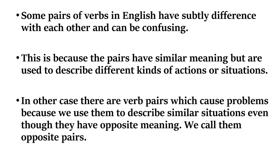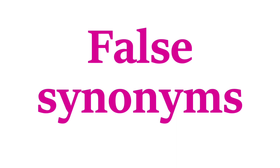Some pairs of verbs in English have subtle differences with each other and can be confusing. This is because the pairs have similar meanings but are used to describe different kinds of actions or situations. In other cases, there are verb pairs which cause problems because we use them to describe similar situations even though they have opposite meanings. We call them opposite pairs. First, we speak about false synonyms.